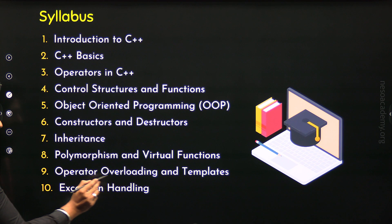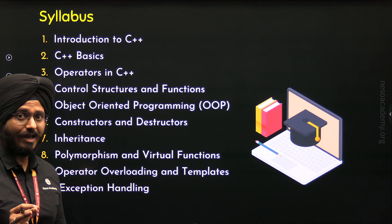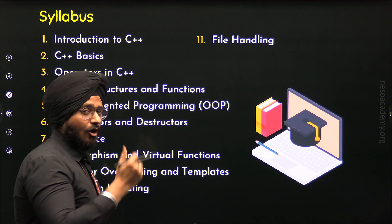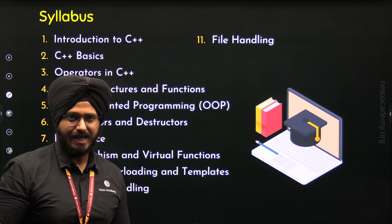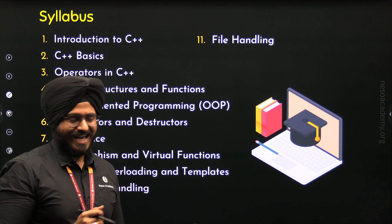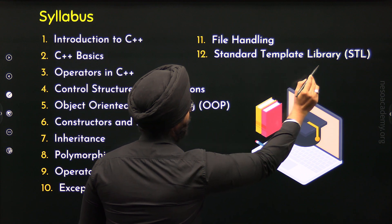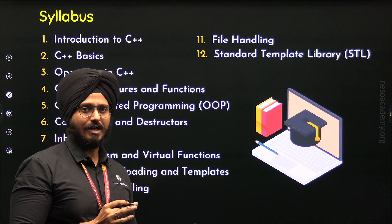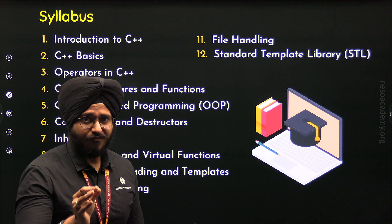Chapter 10 is about exception handling. We will learn how to handle exceptions and errors beautifully with the help of try, catch, and throw blocks. Chapter 11 is about file handling, where we will learn how to handle files and perform operations on them, and we will also understand ifstream, fstream, and ofstream — different types of streams available to us. Chapter 12, the final chapter, is about the Standard Template Library (STL). We will get an overview of STL and understand different types of containers, iterators, function objects, and lambda functions.